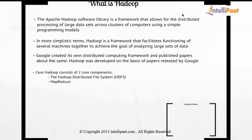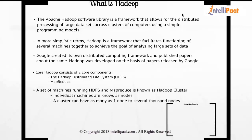Hadoop consists of two core components: one is HDFS — Hadoop Distributed File System — and the other one is MapReduce. A set of machines running HDFS and MapReduce is known as a Hadoop cluster. Individual machines are known as nodes, and a cluster can have as few as one node and as many as several thousand nodes.